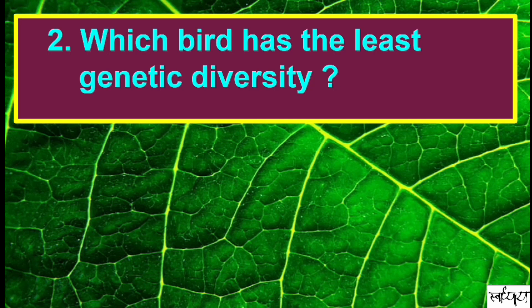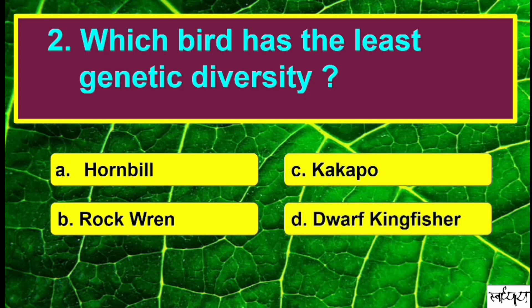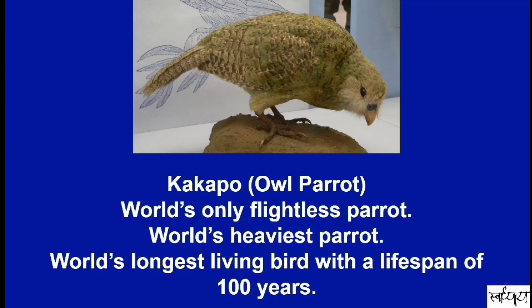Which bird has the least genetic diversity? The answer is Kakapo, also known as Owl Parrot. It is the world's only flightless parrot. It's one of the heaviest parrots in the world and also the longest living bird with a lifespan of 100 years.